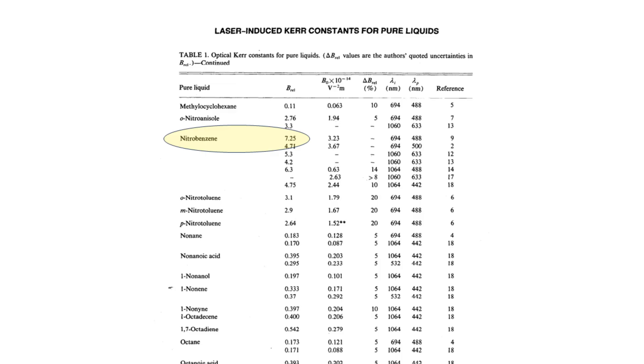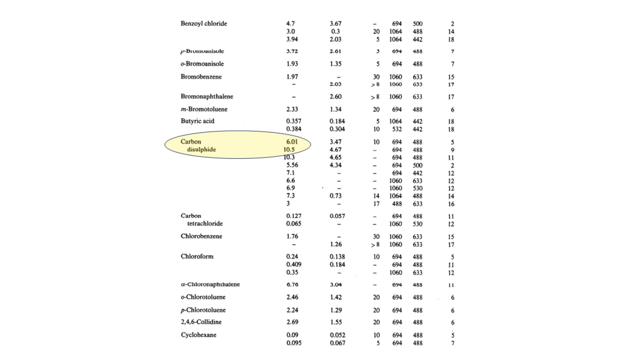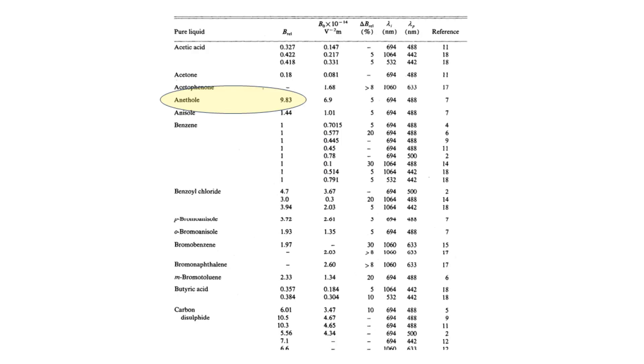Once again, the usual suspects can be seen in the table as having high values. Nitrobenzene, carbon disulfide, etc. In this list, one chemical in particular stands out as having a very high optical Kerr constant. This is the chemical anethole. We can see it has a relative value of 9.83, higher even than nitrobenzene at 7.25.